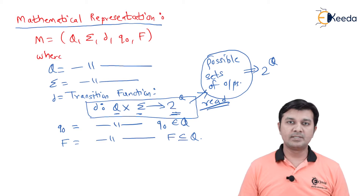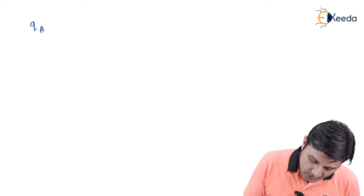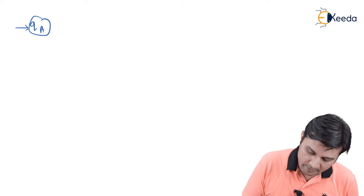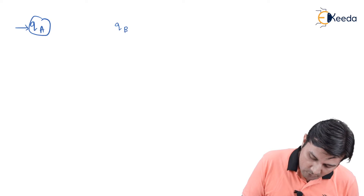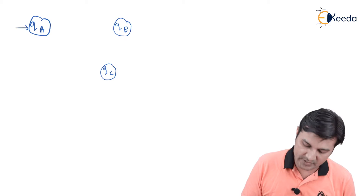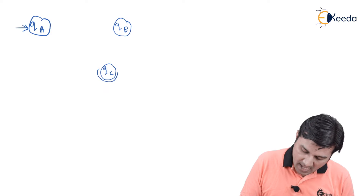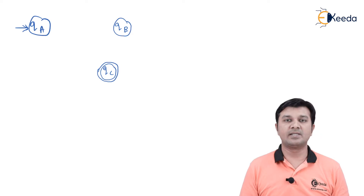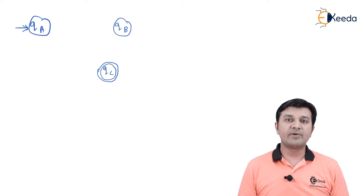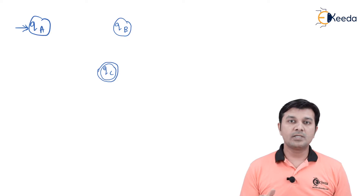Jumping directly into the example: I have three states — qa, qb, and qc — as we had before. qa is the start state and qc is the final state. Now in NFA, from each state on each input symbol there can be zero, one, or more transitions.